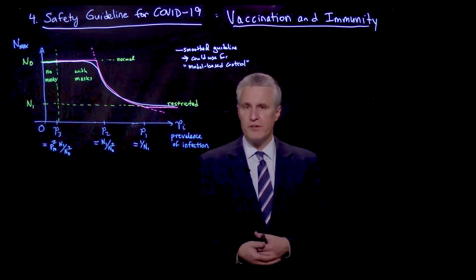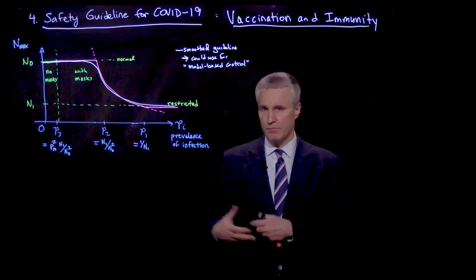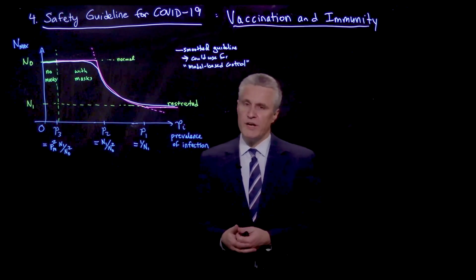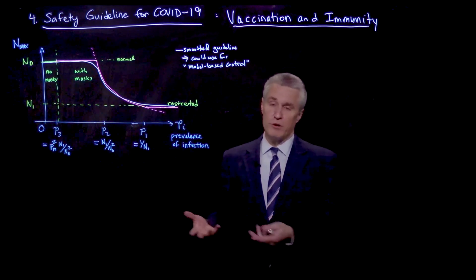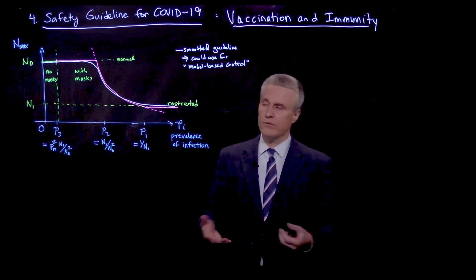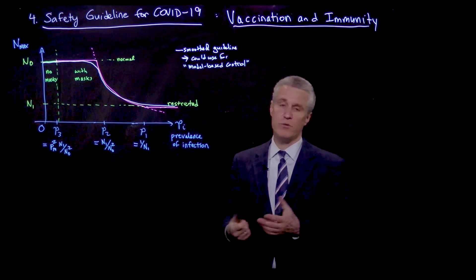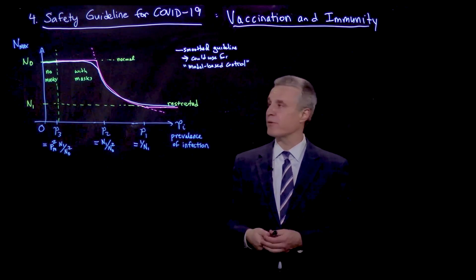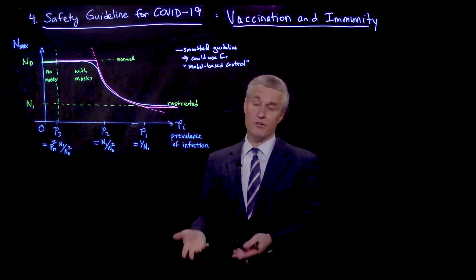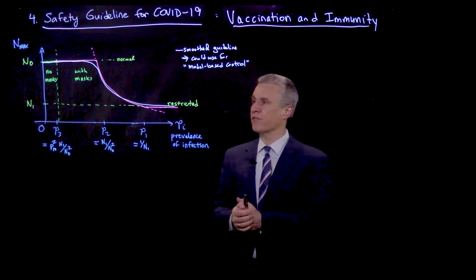We've just discussed the strategies for reopening schools and businesses based on the indoor safety guideline for a given space and its various physical parameters. The new concept we added was prevalence of infection — how many infected people we might expect in a room on average. As that number goes to zero and the pandemic subsides, we can switch from a restricted occupancy N1, prescribed by the indoor reproductive number guideline, up to N0, the normal occupancy, initially with masks. As prevalence goes down, we switch to removing masks and returning to normal.